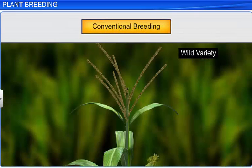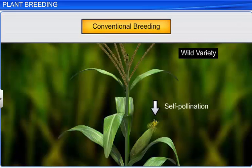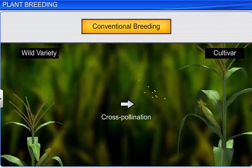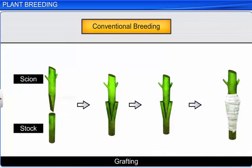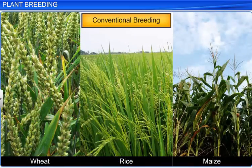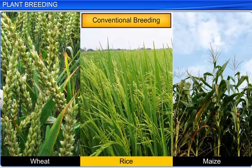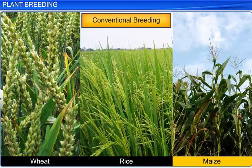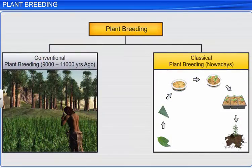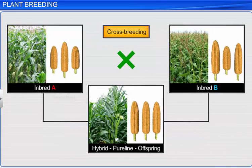Conventional or traditional breeding is crossing plants for desirable characters sexually through self or cross-pollination, or asexually through grafting. Most of the major crops such as wheat, rice, and maize are the result of conventional breeding. On the other hand, classical breeding uses techniques such as mutation or tissue culture, followed by cross-breeding of pure lines and artificial selection of plants.